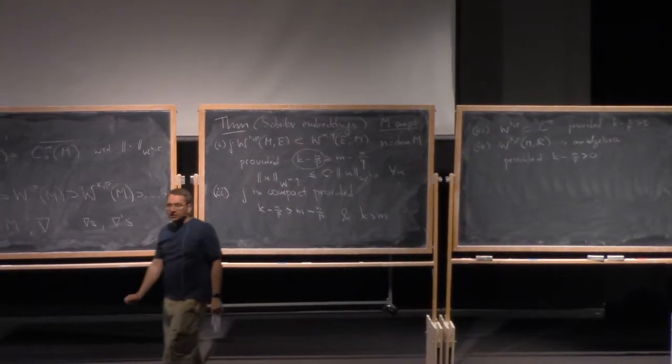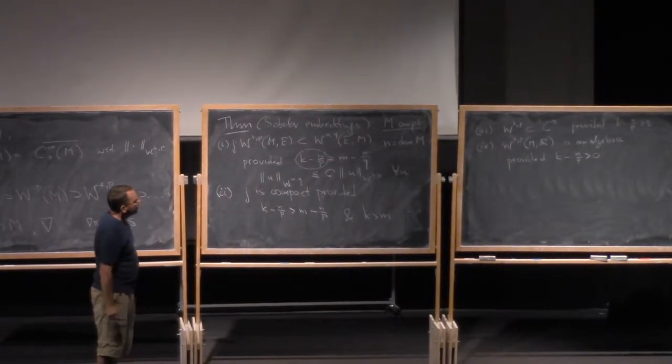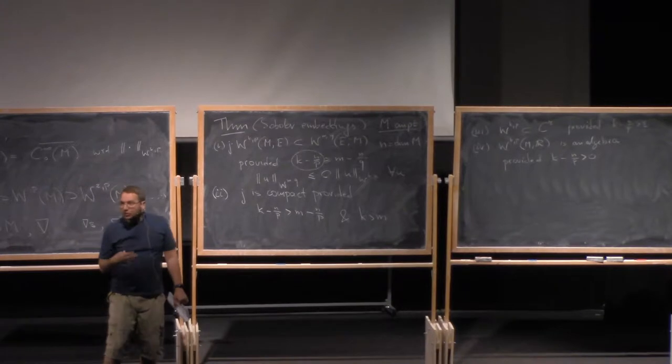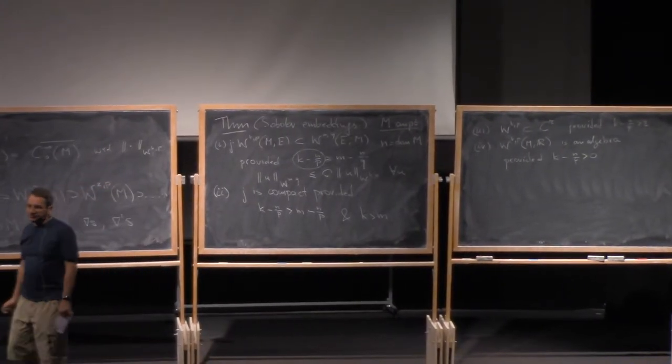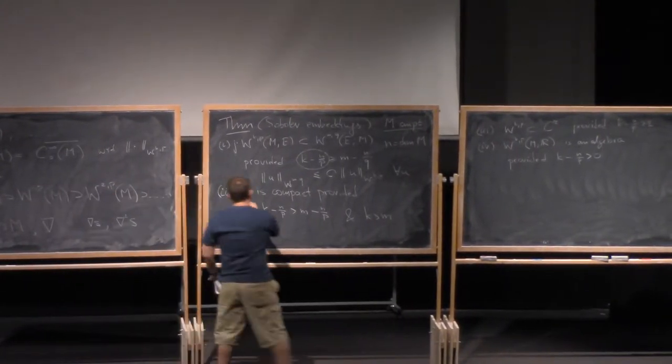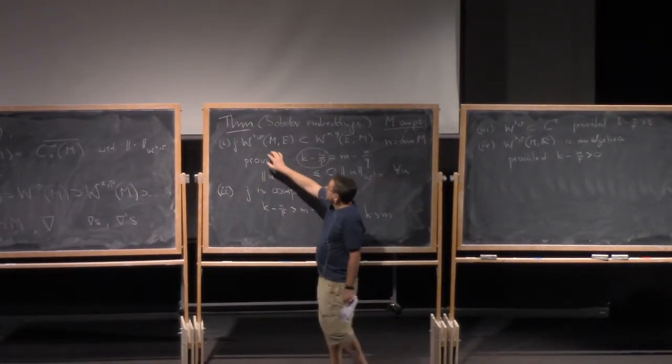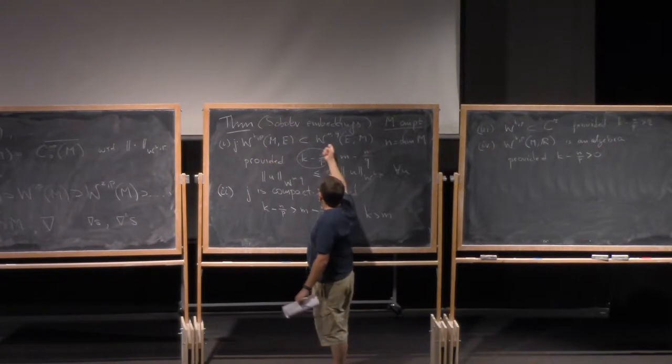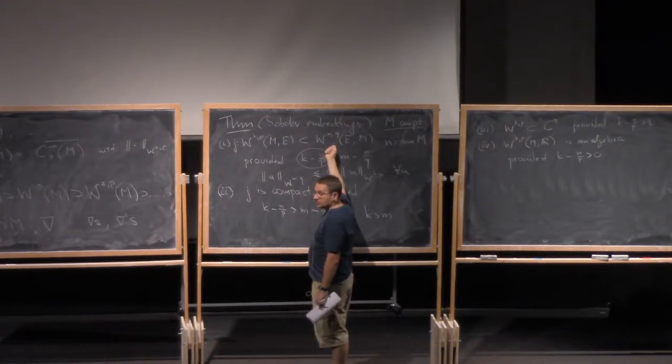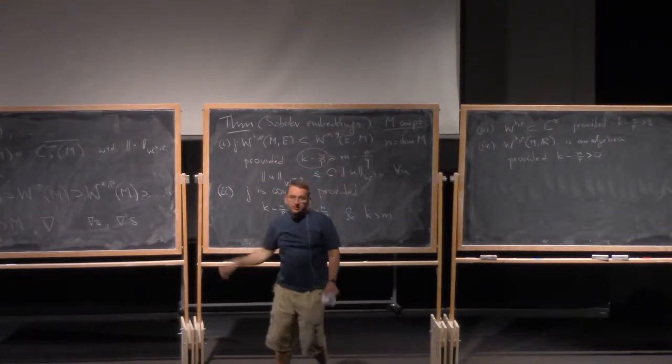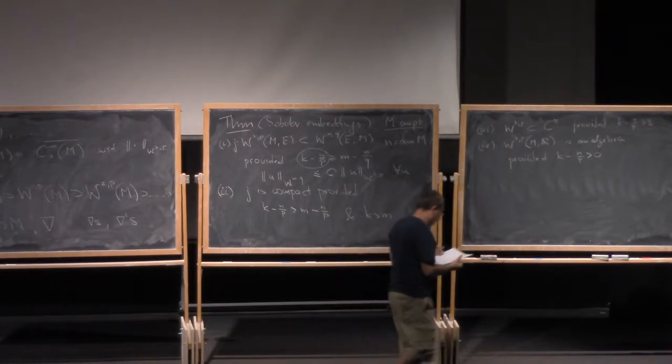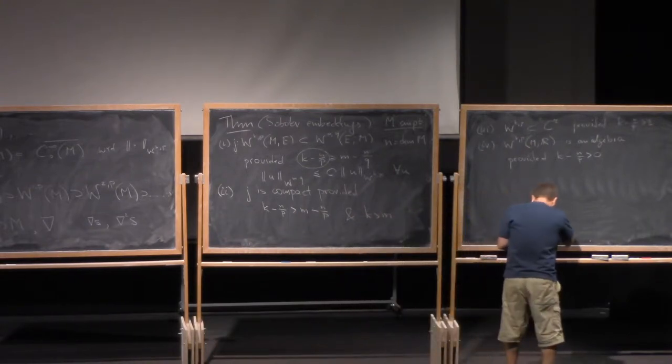Yes? So in the third part, it is also like extension of identity? Yes, it's always the extension of the identity. So by the way, by saying that J is compact, what I mean is that whenever you have a bounded sequence in this space, its image in this space has a convergent subsequence. Right, that's the definition of the compact operator.